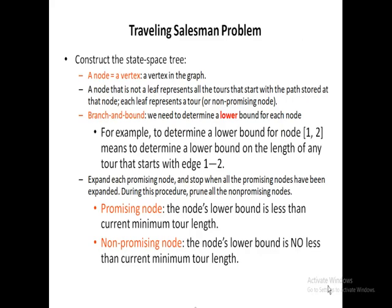To solve TSP using Branch and Bound, we first construct the state space tree. A node is equivalent to a vertex in the graph. A non-leaf node represents all the tours that start with the path stored at that node, and each leaf represents a complete tour. At the root level, we consider the starting vertex. In Branch and Bound, we need to determine a lower bound for each node — for example, to determine a lower bound for node 1 to 2 means to find a lower bound on the length of any tour that starts with the edge 1 to 2.